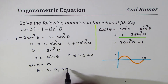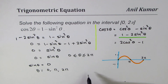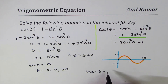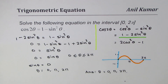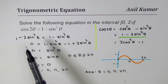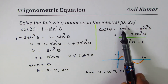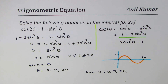So clearly θ equals zero, pi, or two pi. These are the three possible angles for which the equation cos(2θ) equals one minus sin²θ holds in the interval zero to two pi. I hope the concept is absolutely clear. Feel free to share and subscribe to my videos, post comments — thank you and all the best.